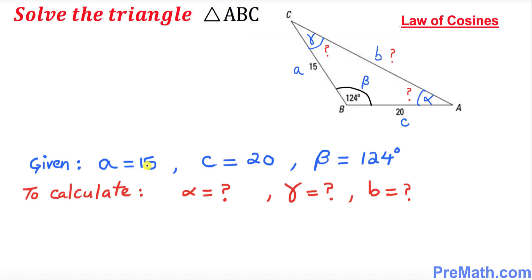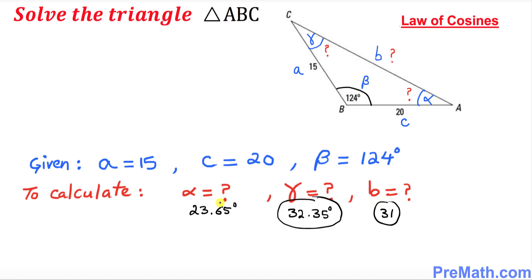Gamma turns out to be 32.35 degrees. Thus we have solved triangle ABC. Our unknown values are: alpha equals 23.65 degrees, gamma equals 32.35 degrees, and side b equals 31 units. We have figured out all three angles and three sides. Thanks for watching — please subscribe to my channel for more exciting videos.